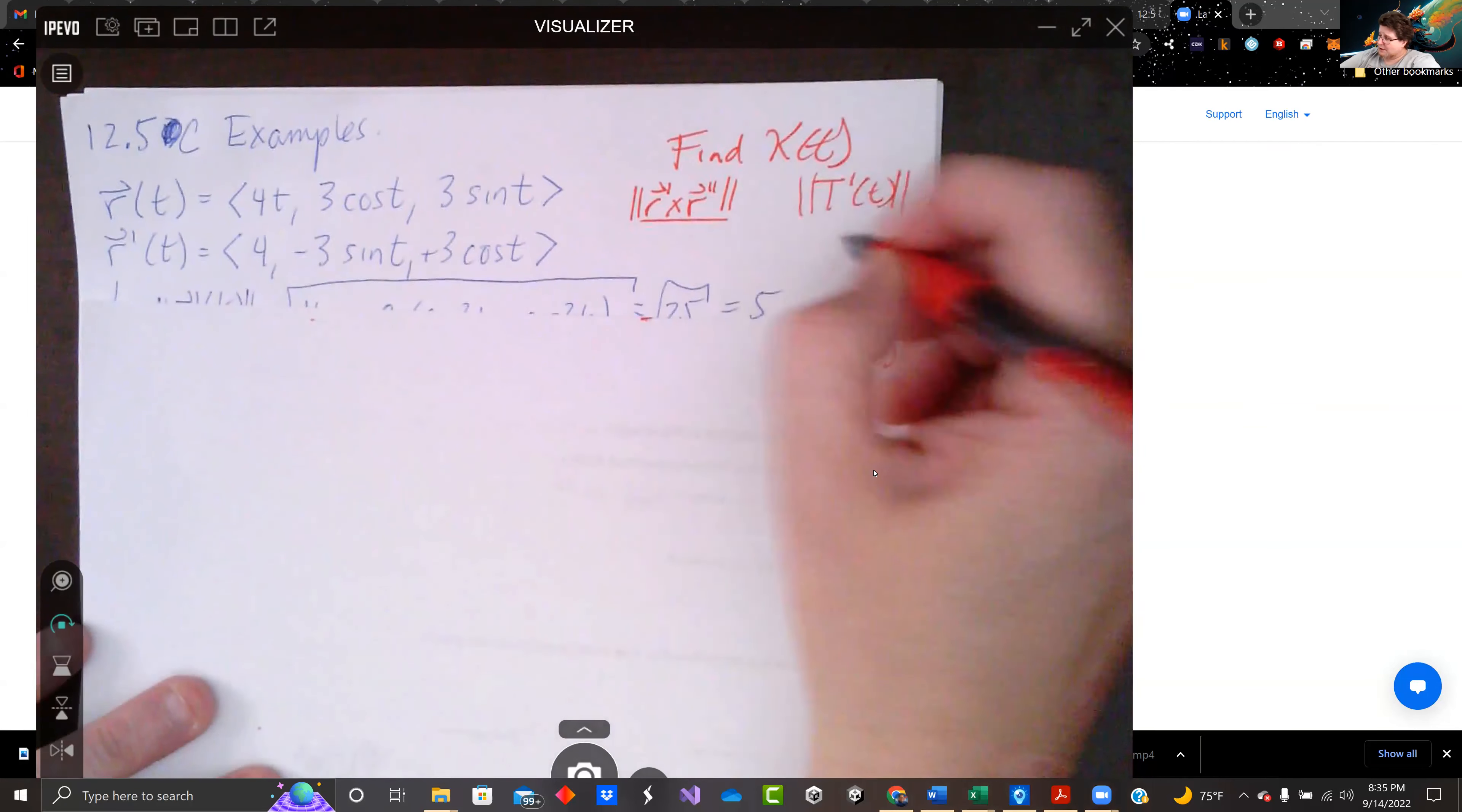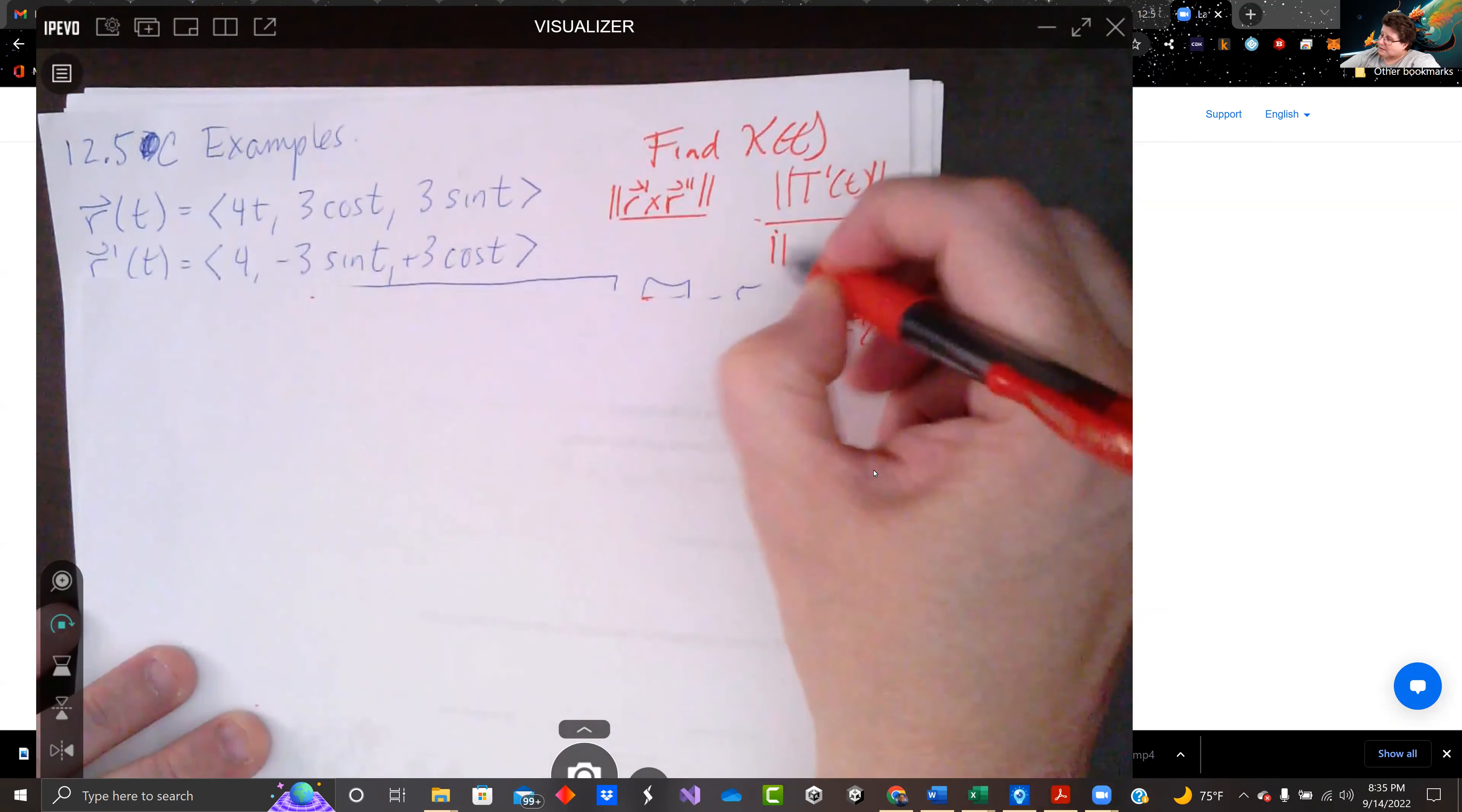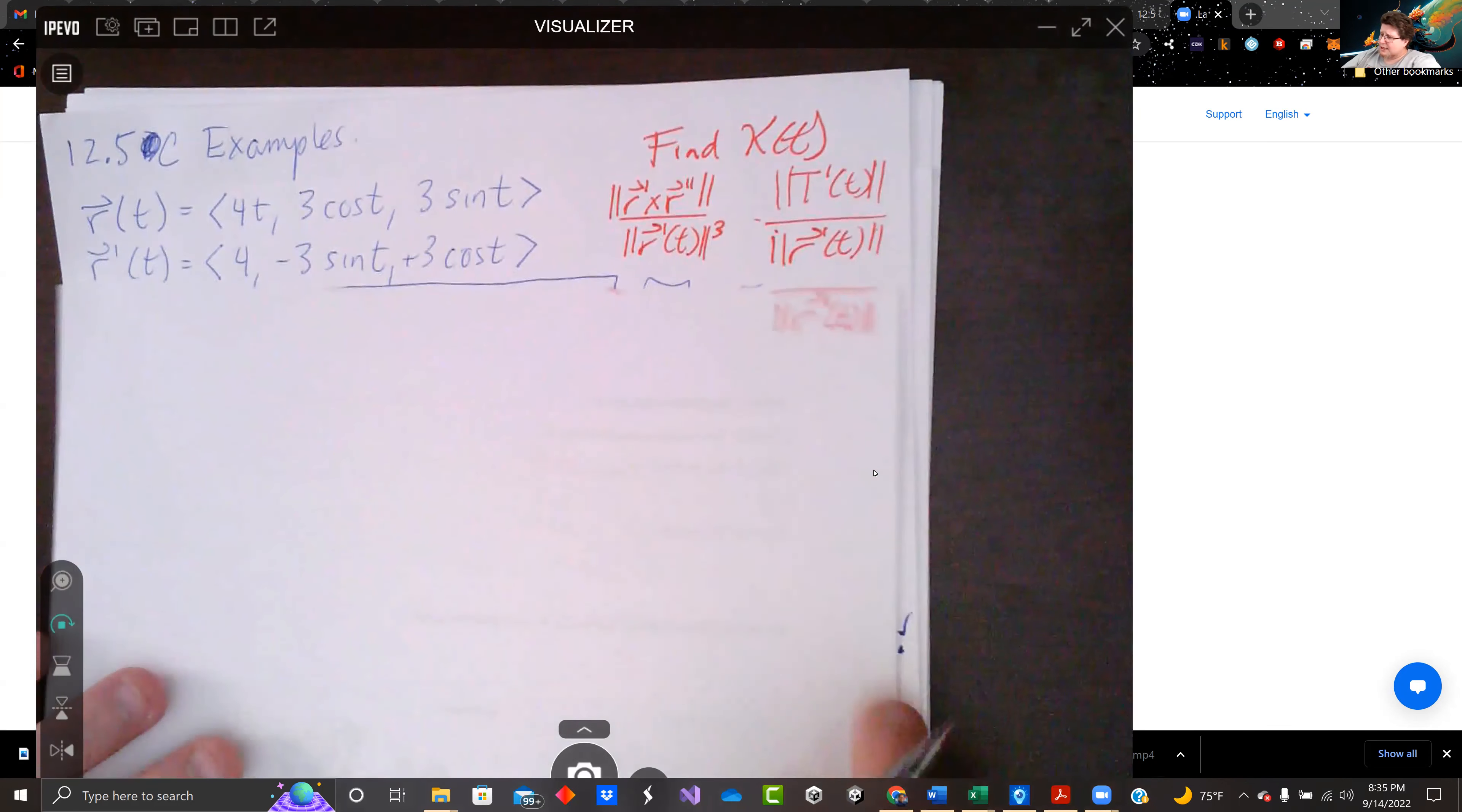I just wrote another piece of paper. And over here, we have the magnitude of r prime of t cubed. I don't know which one we want to use yet.